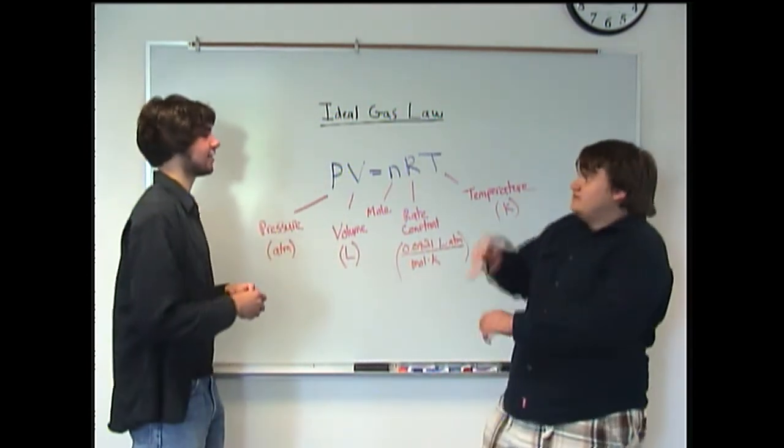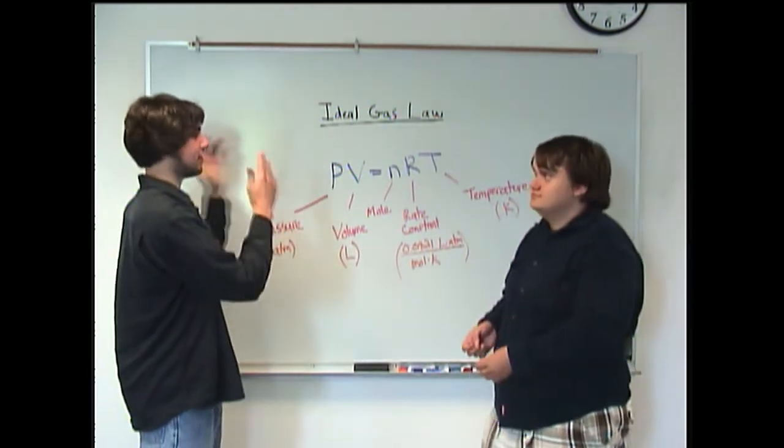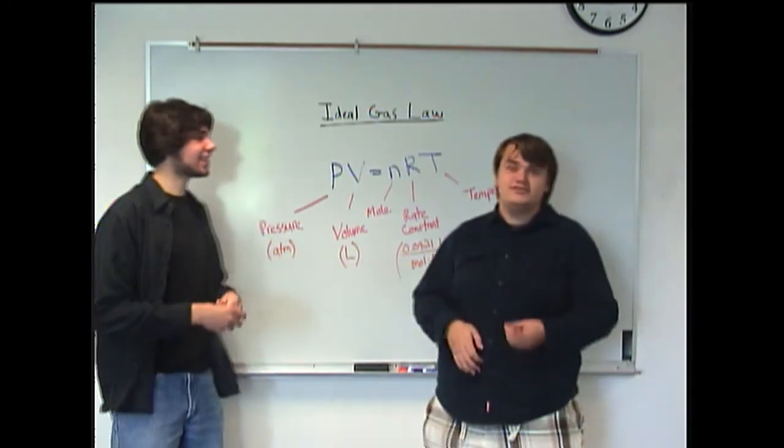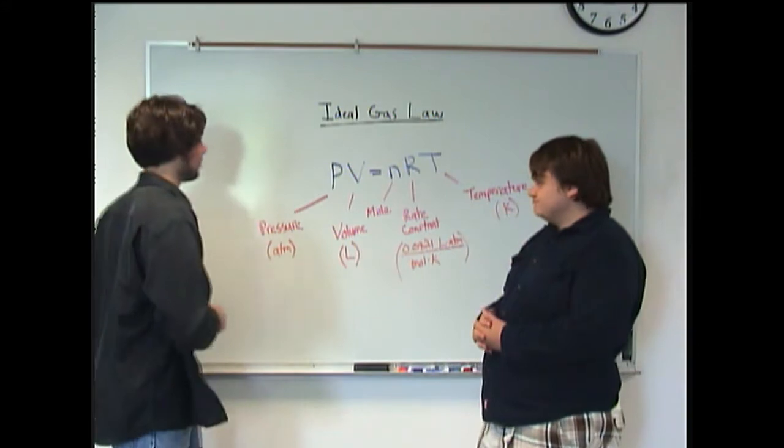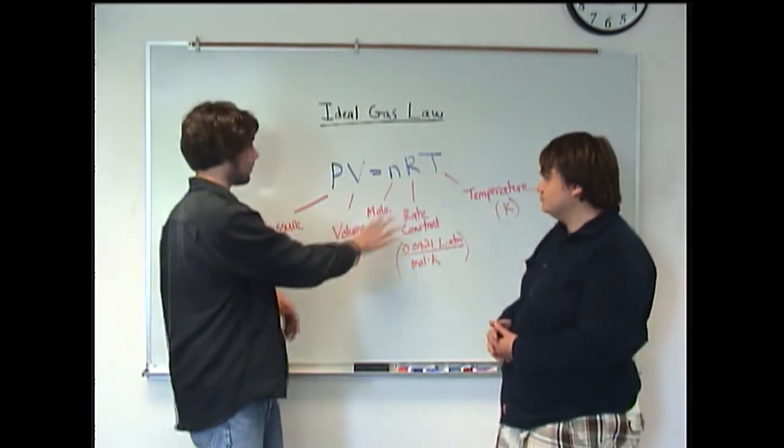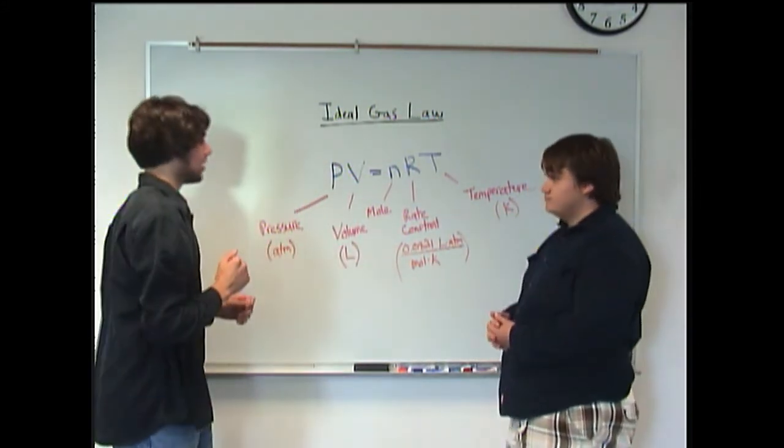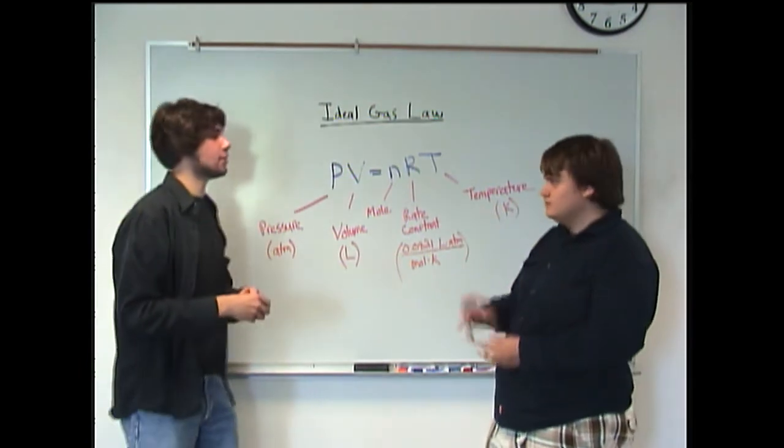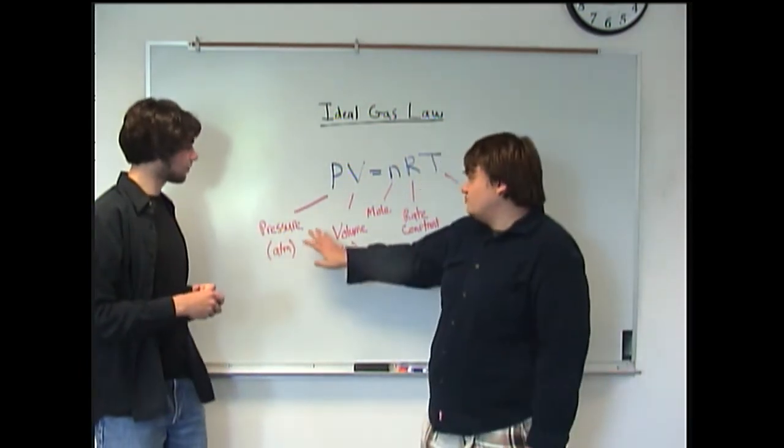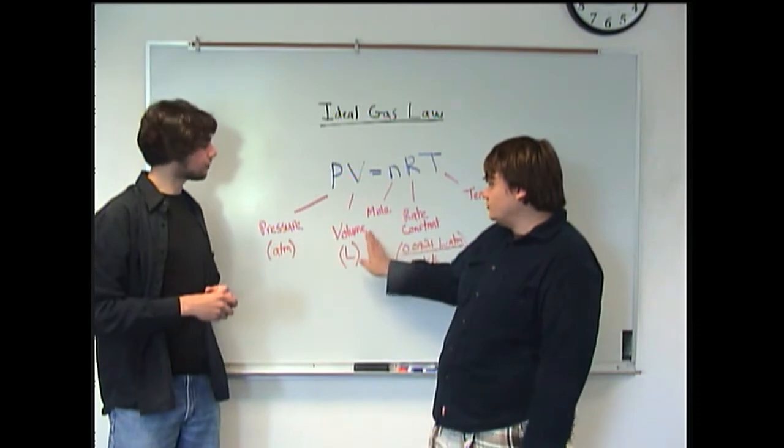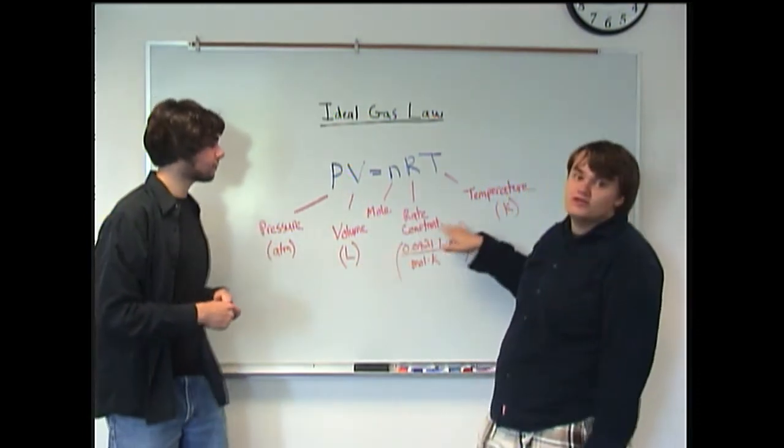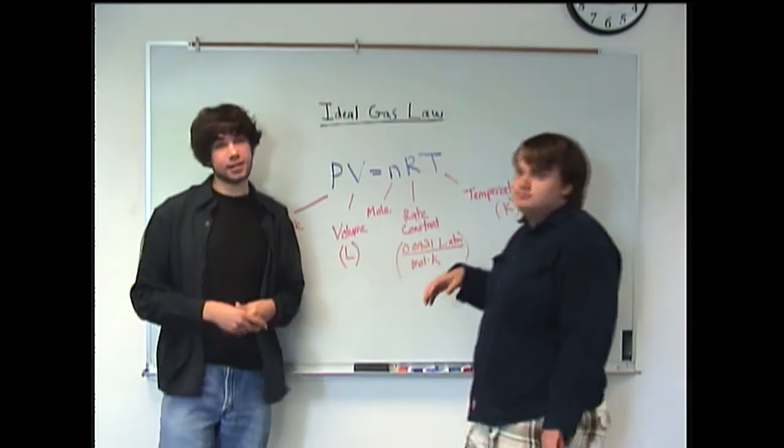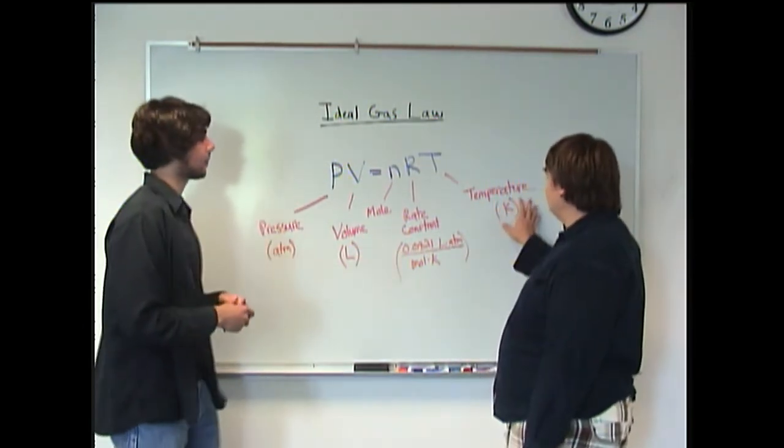So you say this is the perfect gas law. Yes, so perfect that it's shining. I should have brought sunglasses. Alright Kevin, so I wrote out what all these different variables mean. Any chance you can figure out what we might use this equation for? So we have pressure, volume on this side, and we have moles, and then this rate constant, whatever that is. It's basically just a constant number. Then we have temperature.